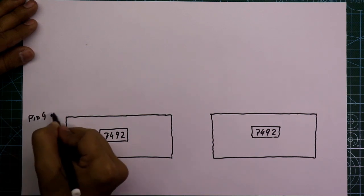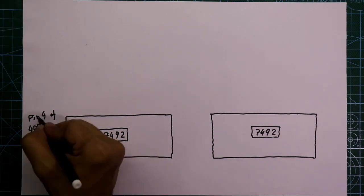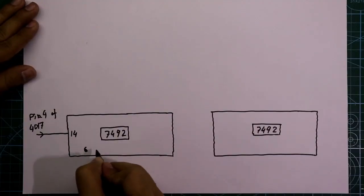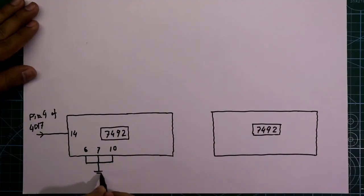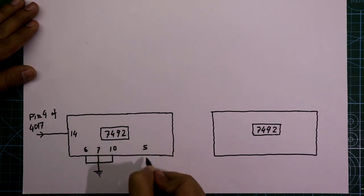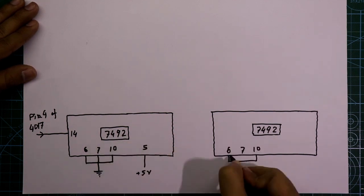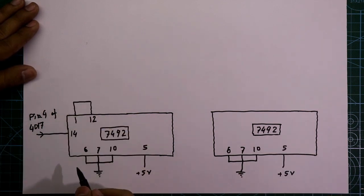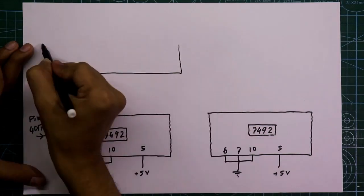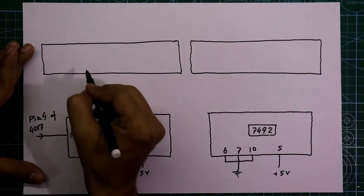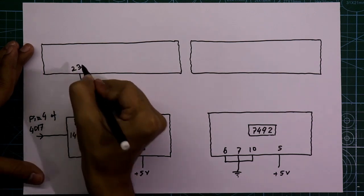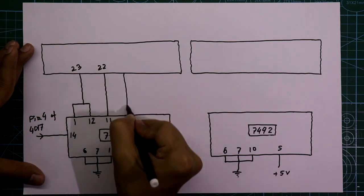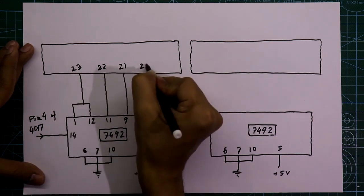The 7492 IC's pin number 14 is connected to pin number 4 of the third 4017 from the previous part. Pins 6, 7, and 10 are connected to ground; pin 5 is connected to plus 5 volts. Pins 1 and 12 are connected together. We also need two pieces of another IC — the 74154. Its pin 23 connects to pins 1 and 12; pin 22 connects to pin 11; pin 21 to pin 9; and pin 20 to pin 8.